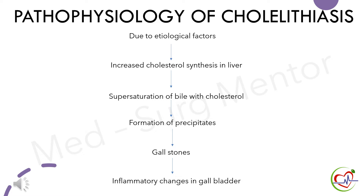Pathophysiology of cholelithiasis: Due to etiological factors like increased cholesterol or bilirubin synthesis in the liver, there is supersaturation of bile with either cholesterol or bilirubin. This leads to formation of precipitates or crystals, which are called gallstones. As the size of the gallstones increases, it leads to inflammatory changes in the gallbladder.